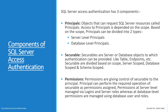Server-level Principals are those which can be granted server-level permissions and can access server objects. Database-level Principals are those which can request database objects and can access database-level settings. Securables are server or database objects to which authentication can be provided — such as tables and endpoints. Securables are divided based on scope: server scoped, database scoped, and schema scoped.